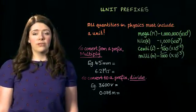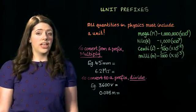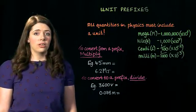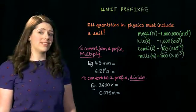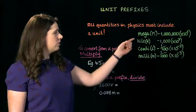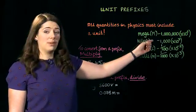Now often units have got a prefix in front of them to change the size of the unit to make them more sensible to use. There's some common examples of the prefixes here. We've got mega, which is symbolized by a capital M, and that means times a million. We have kilo with the symbol of a small k, which means times a thousand.